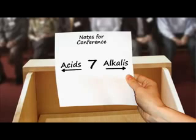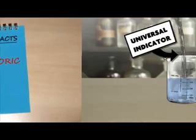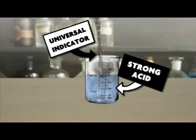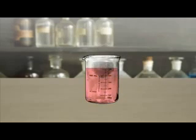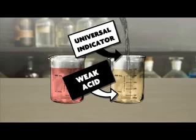So we know that seven is the key pH. Below this we have acids, and above we have alkalis. But what else can we say about them? Acids turn blue litmus paper red. Strong acids turn universal indicator red too, and weak ones turn it orange or yellow.